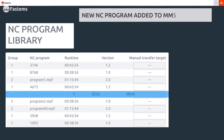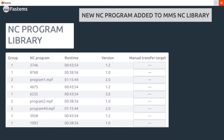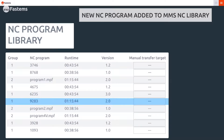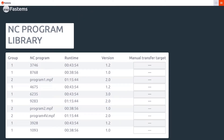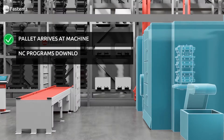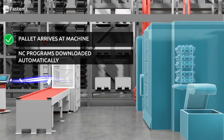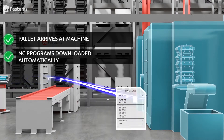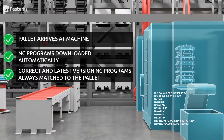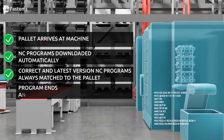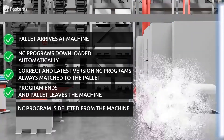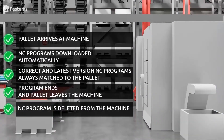The MMS Library application maintains all of your system's NC programs. The palette is identified when it arrives at the machine, and the NC programs are automatically downloaded. This assures the correct matching of the NC program versions and the palette. When the program ends and the palette leaves the machine, the NC program is deleted.